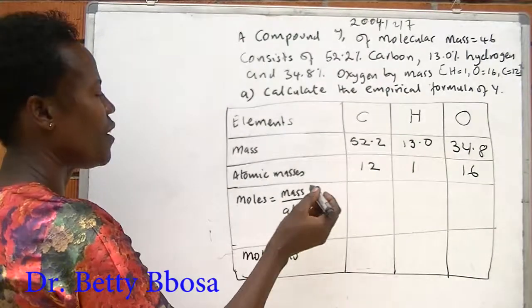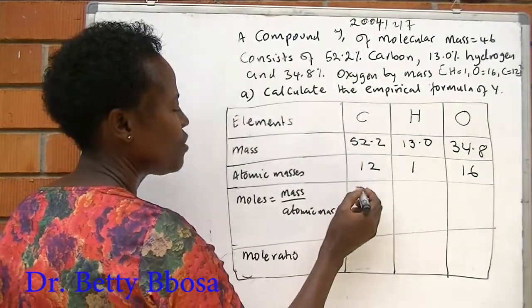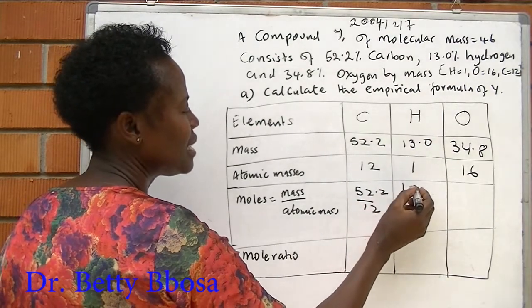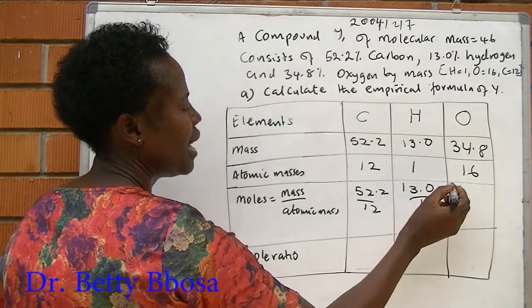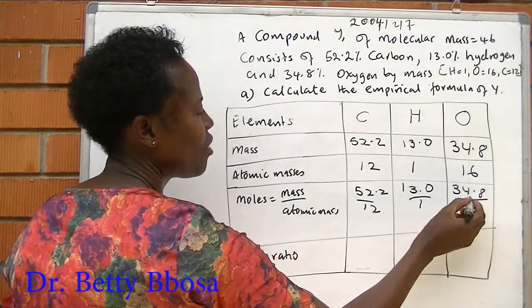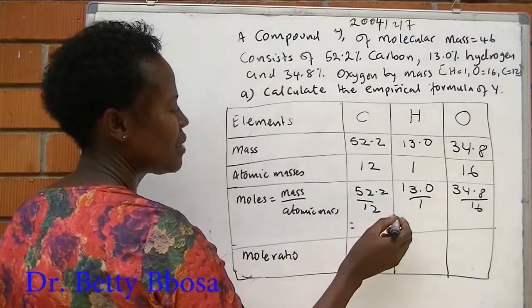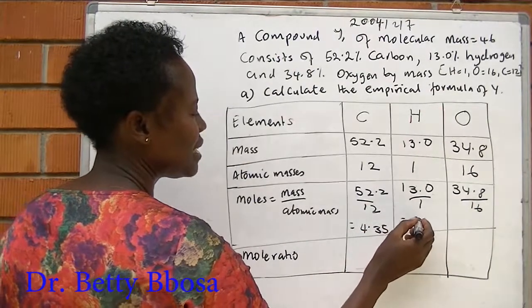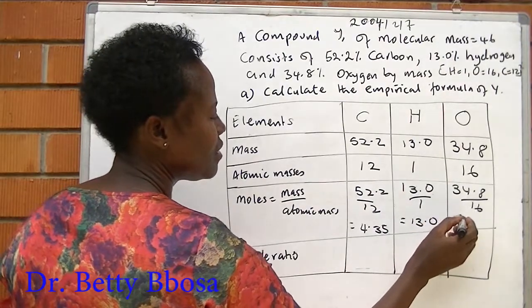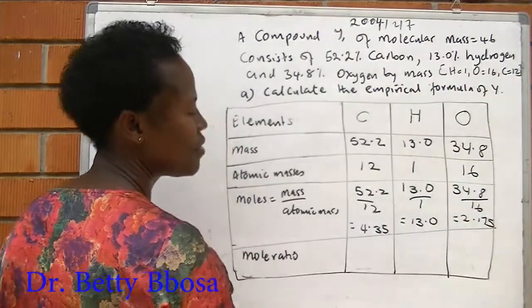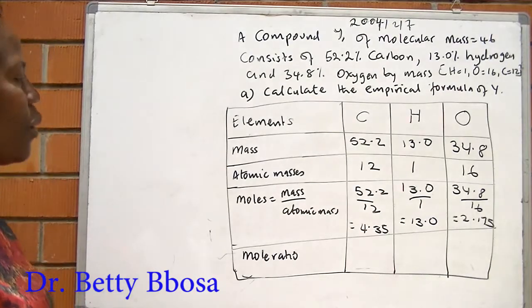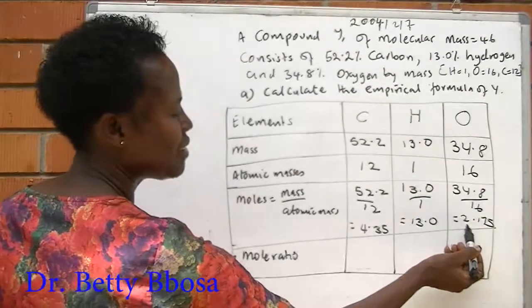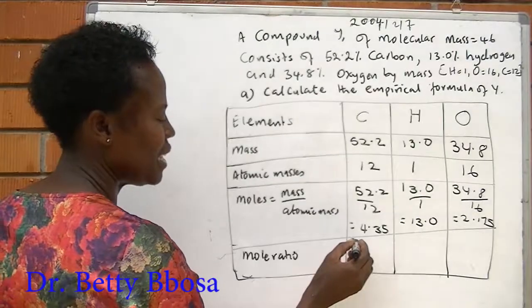Now, in this box of moles, we divide mass over atomic mass, which is 52.2 over 12, 13.0 over 1, and 34.8 over 16. This gives us 4.35, 13.0, and 2.175. Now, among all these values, we choose the smallest to get the mole ratio. The smallest is 2.175, so we divide it throughout.